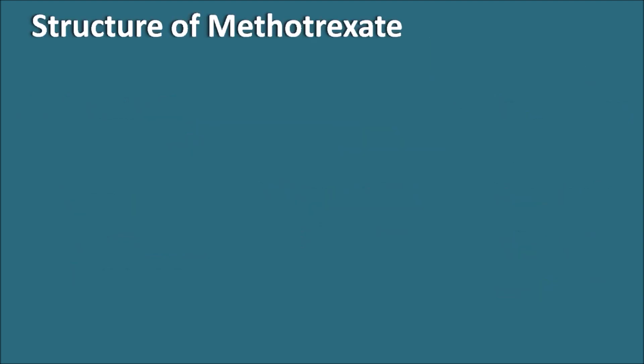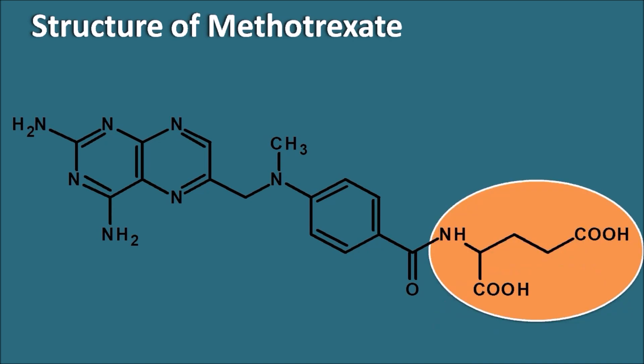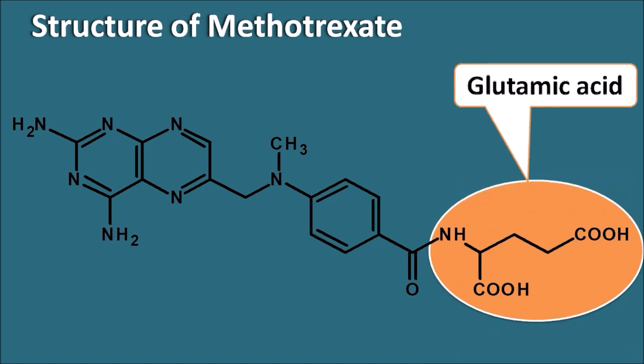Methotrexate has a large structure with three important components. The first important moiety is glutamic acid, which is a 5-carbon dicarboxylic acid with an alpha-amino group.